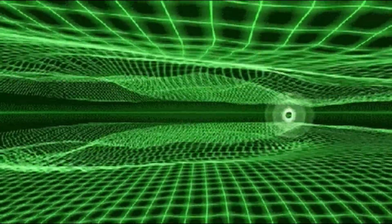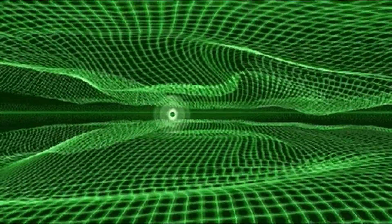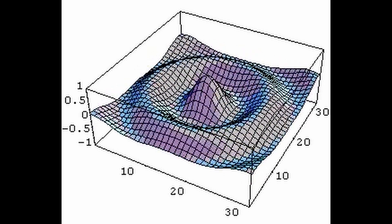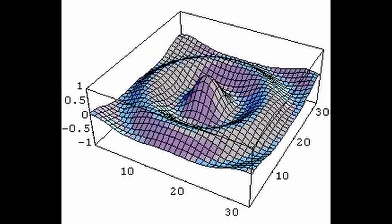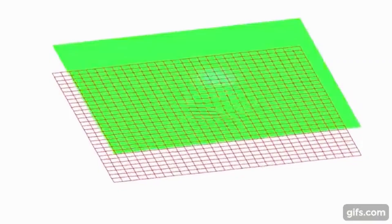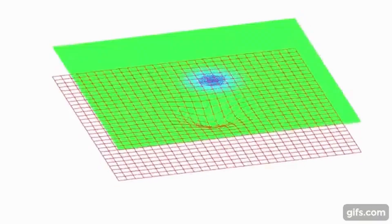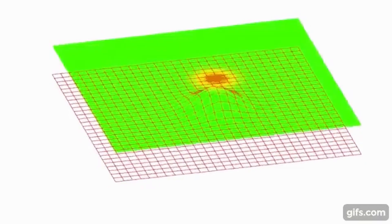Feynman diagrams: one of the most important tools in QFT is Feynman diagrams, which provide a graphical representation of the mathematical expressions that describe particle interactions. Each line in a Feynman diagram represents a particle propagator, which describes the motion of a particle between two points in space and time. The vertices of the diagram represent interactions between particles, and are associated with factors that describe the strength of the interaction. Feynman diagrams can be used to calculate the probability amplitudes for various particle interactions, and can be used to predict the results of experiments involving particle accelerators, including cross sections.